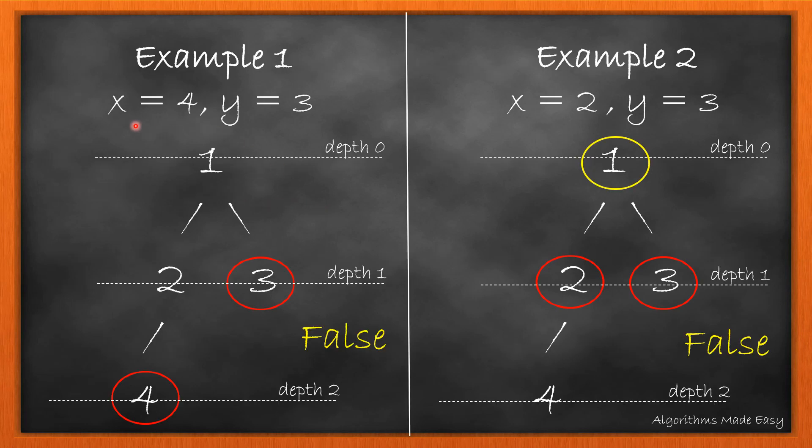Now as for being cousins, we know that the depth of nodes must be equal and the parents must be different. In example 1, the depth is not equal so we return false.